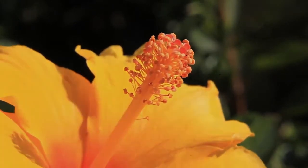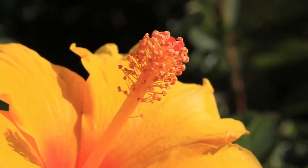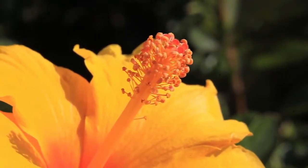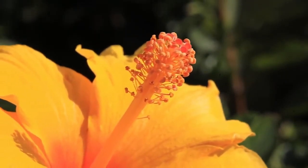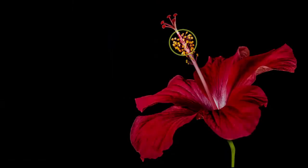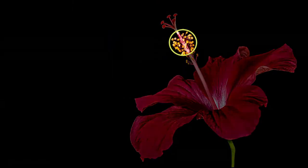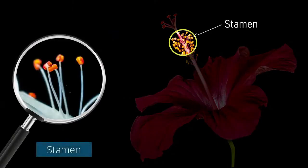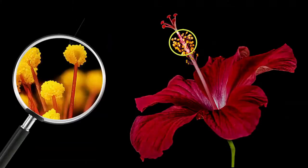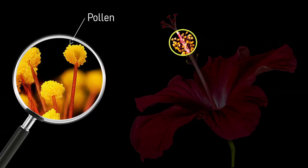In this hibiscus flower, both male and female reproductive parts are present. It is called a bisexual flower. The male reproductive part is called the Androecium. In the Androecium, stamens are present. In each stamen, an anther and filament are present. Pollen grains are produced in the anther. Pollen grains consist of male gametes.